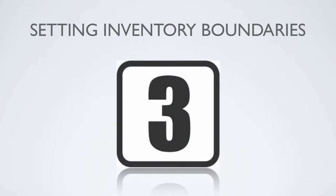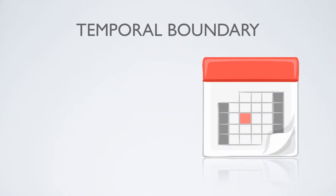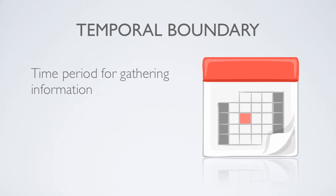There are three steps to setting boundaries for a GHG inventory. First, the company must decide for which time period it is gathering information. Is the company creating a GHG inventory for a calendar year, a fiscal year, or perhaps another time period? This is known as a temporal boundary.